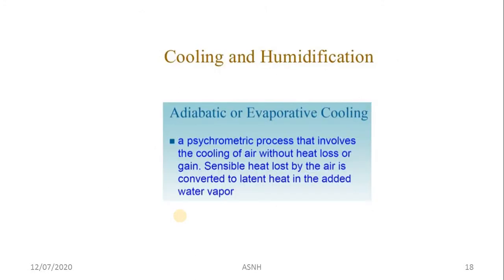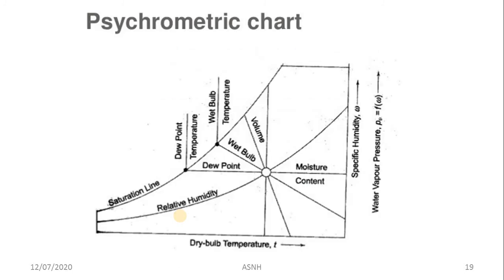Cooling and humidification is the psychrometric process that involves cooling of air without heat loss or gain. Sensible heat lost by the air is converted into latent heat in the added water vapor — this is generally called adiabatic or evaporative cooling. The air cools without any heat loss or heat gain.